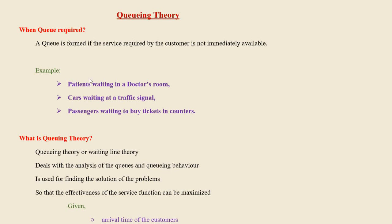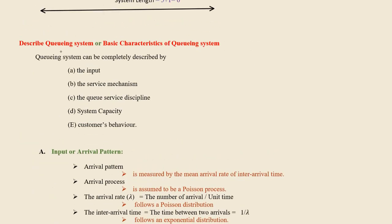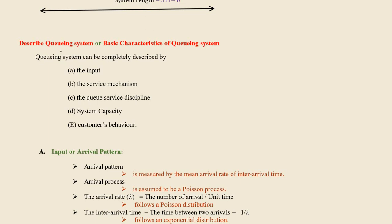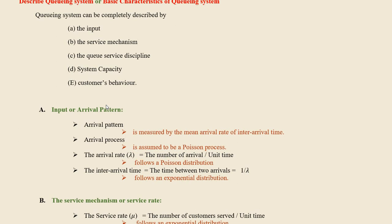Through this video we'll learn about the basic characteristics of a queuing system. The queuing system has five components: the first one is input, the second is service mechanism, the third is queue discipline, the fourth is system capacity, and finally customer behavior. These are the five characteristics of a queuing system.